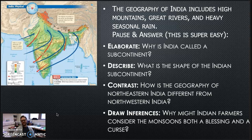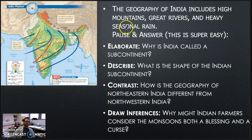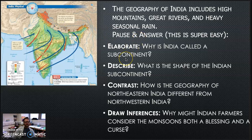The geography of India includes high mountains, great rivers, and heavy seasonal rain. We have a physical map of India up here in the corner. So we have high mountains, great rivers, and heavy seasonal rain. In just a second, I want you to pause the video and answer these questions. Super easy, don't overthink it.